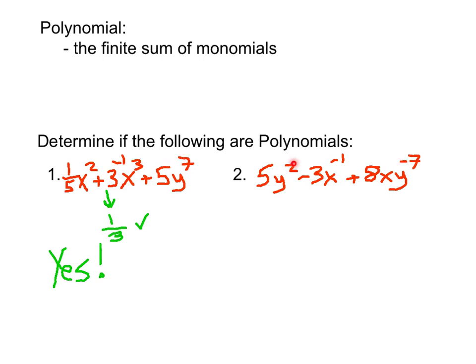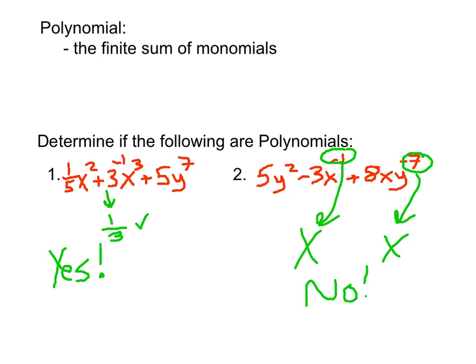Our second example: 5y squared — that's a monomial. We can have subtraction between terms; we can write it as plus negative three. But x to the negative first — that is not good. We cannot have a negative exponent on our variable. And the last term has the same problem. So this would be no — this is not a polynomial because each one of the terms is not a monomial itself.